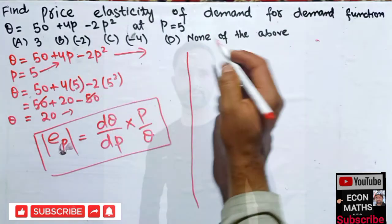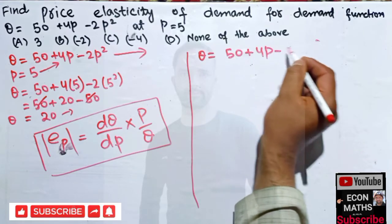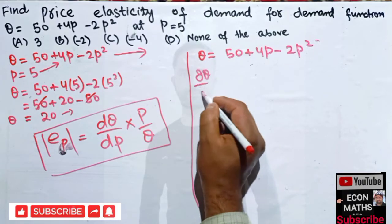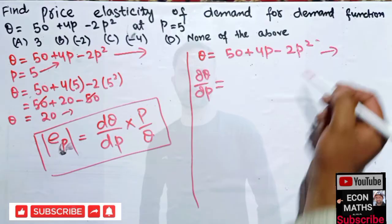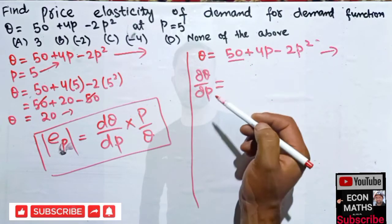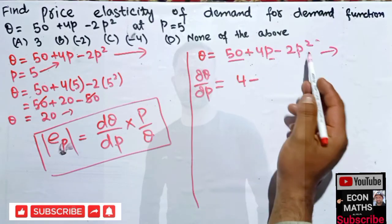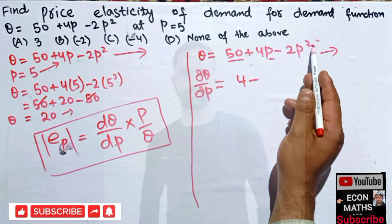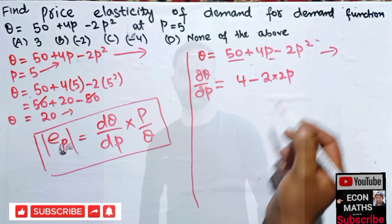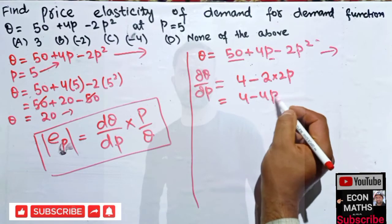We will write it again: q = 50 + 4p - 2p². Now dq/dp is simply the derivative of this demand function with respect to price. The derivative of constant is 0, the derivative of 4p is 4, minus the derivative of p² is 2p, so this becomes 2 × 2p by power function rule. So we get 4 - 4p.